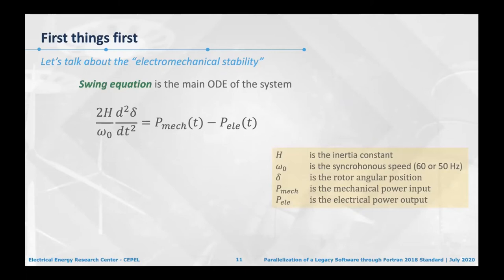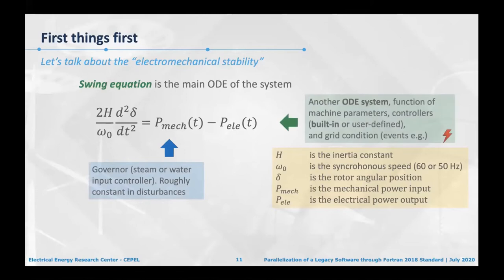The main equation to evaluate this problem is the swing equation, which relates how my synchronous machines — units that convert mechanical power into electrical power — respond to events in the system. If a machine accelerates too fast it must be withdrawn from the system. This equation relates mechanical power and electrical power, where P_elec and P_mec are themselves part of the ODE system and are functions of machine parameters, controllers, and grid conditions such as events.